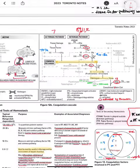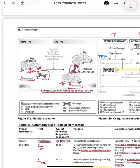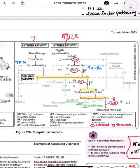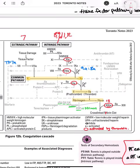Now let's talk about the secondary hemostasis, which includes the extrinsic and intrinsic pathways. The extrinsic pathway is the smaller one and is the one which starts first. The extrinsic pathway is tested by PT — prothrombin time. The intrinsic pathway, which is comparatively longer and amplifies fibrin formation, is tested by PTT.